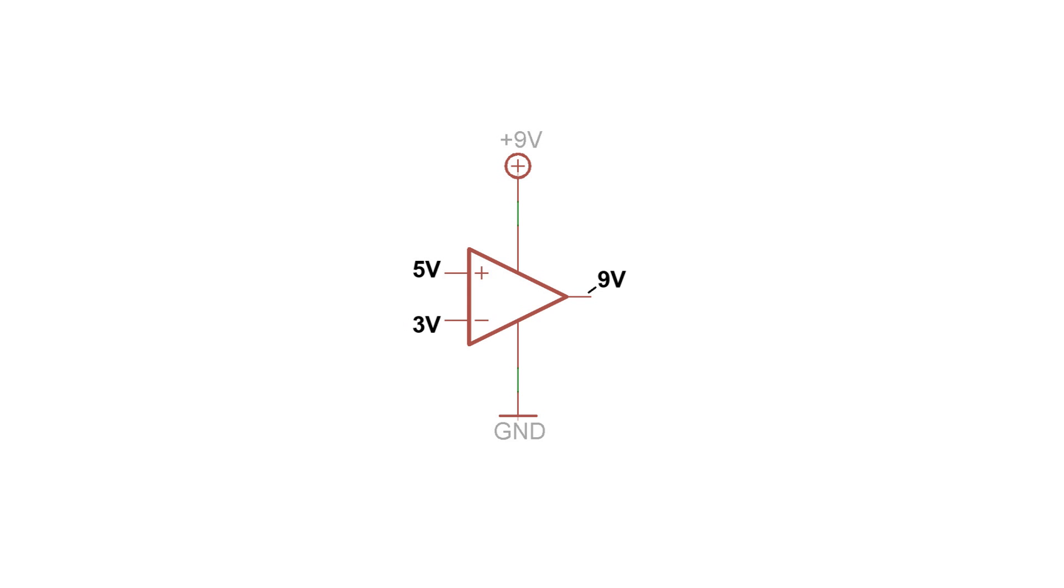So let's do some numeric examples. In this situation, 5 volts is greater than 3 volts, so the output of the op-amp goes high to 9 volts. Swapping those around, now the V-minus voltage is greater than the V-plus voltage, so the op-amp outputs 0 volts.